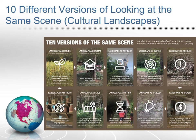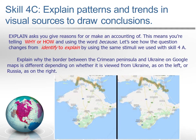Let's take a look at skill 4C: explaining patterns and trends in visual sources to draw conclusions. As I've mentioned in the first three skill category video lectures, 'explain' asks you to give reasons for or make an accounting of — this means telling why or how and using the word 'because.' Let's see how the question changes from identify to explain using the same Crimea stimuli: explain why the border between the Crimean Peninsula and Ukraine on Google Maps is different depending on whether it is viewed from Ukraine or Russia.